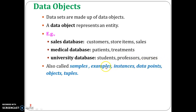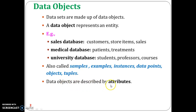Typically, these data objects are described by means of attributes. These data objects are also called by several names: samples, examples, instances, data points, and objects.